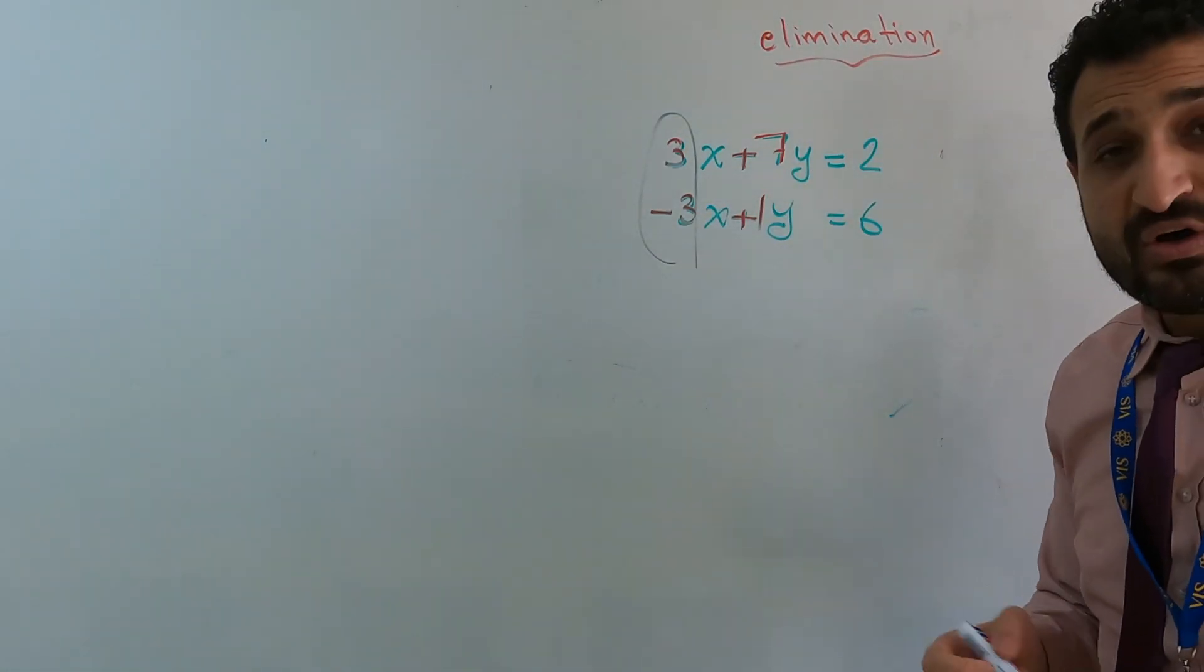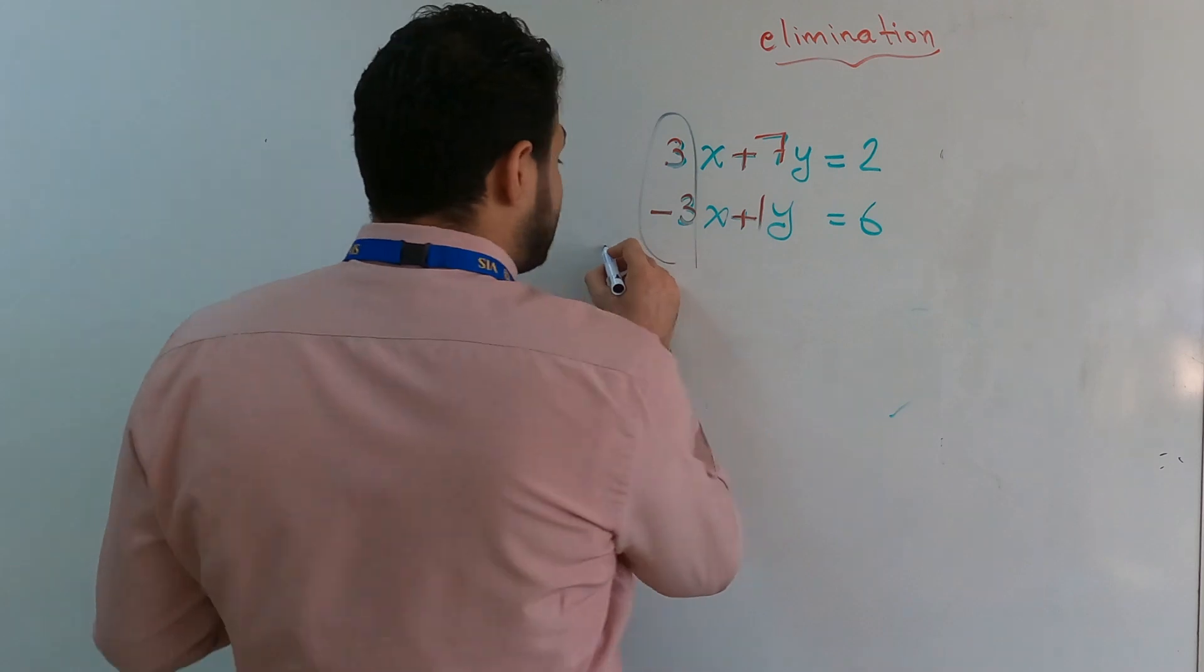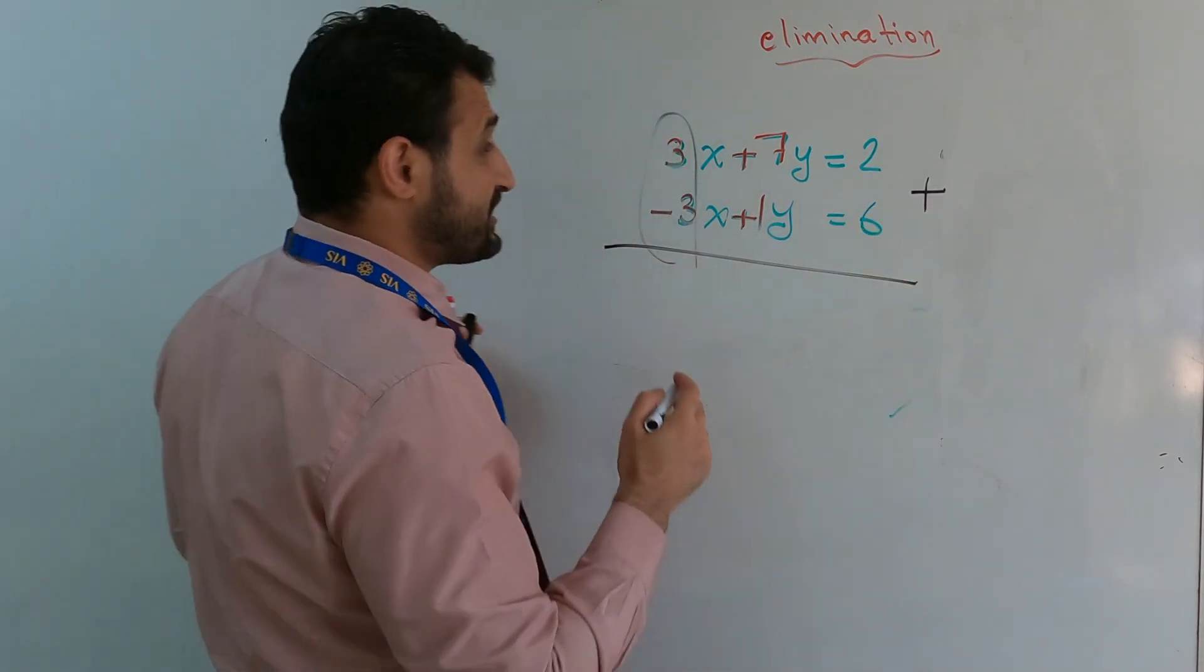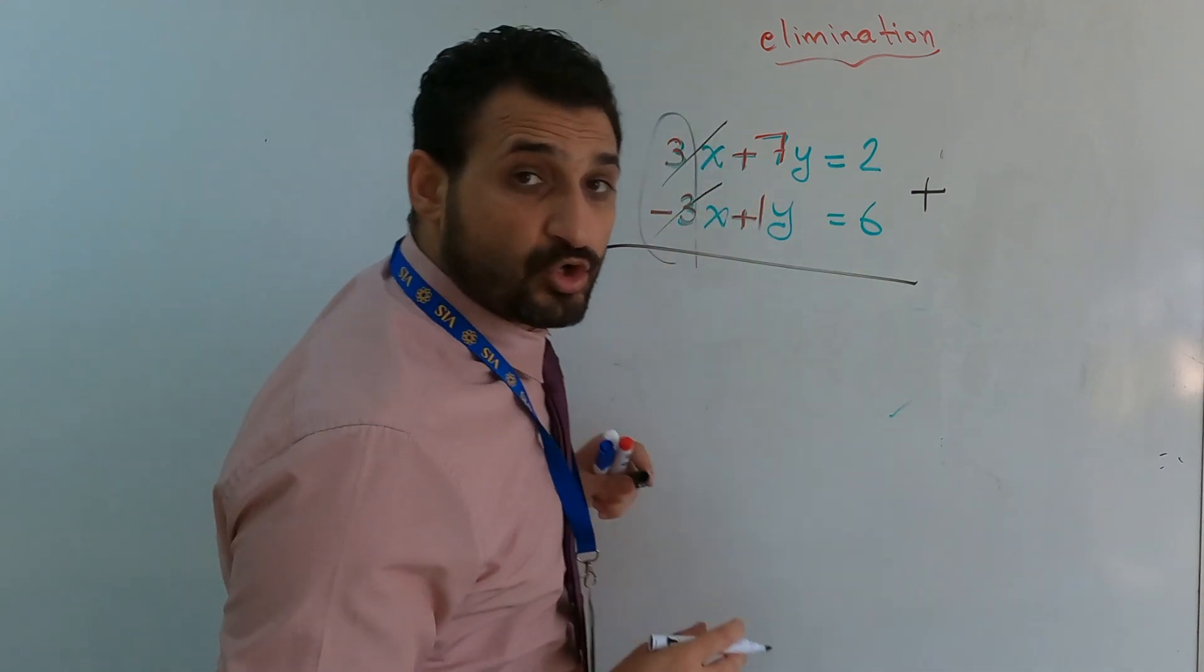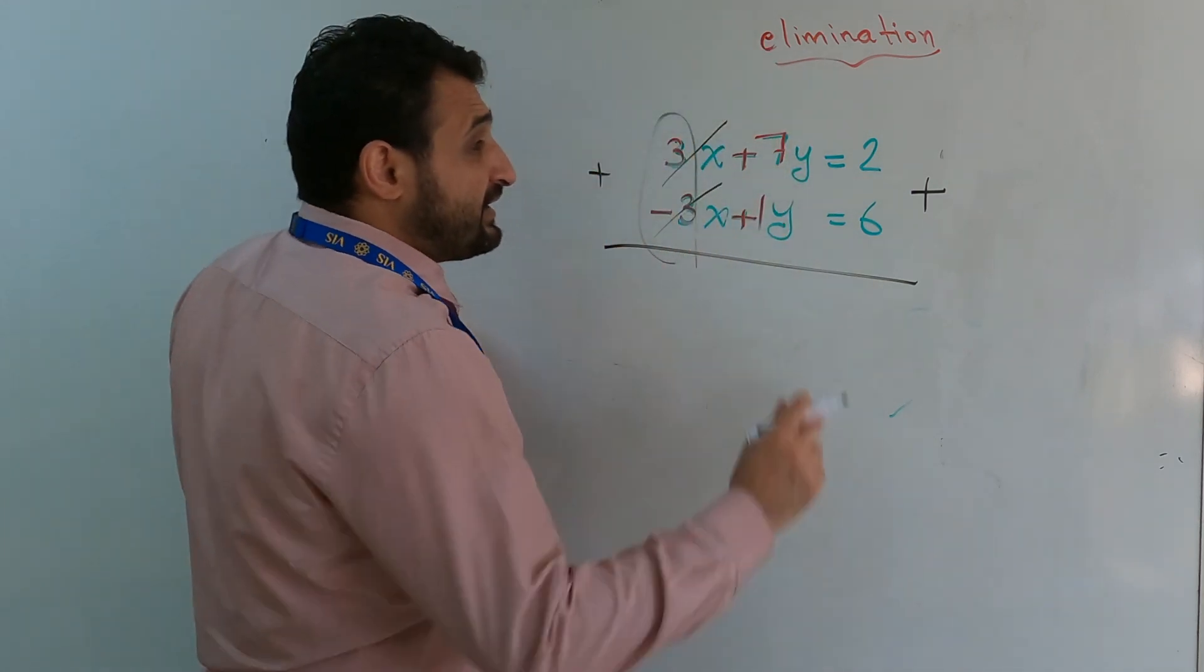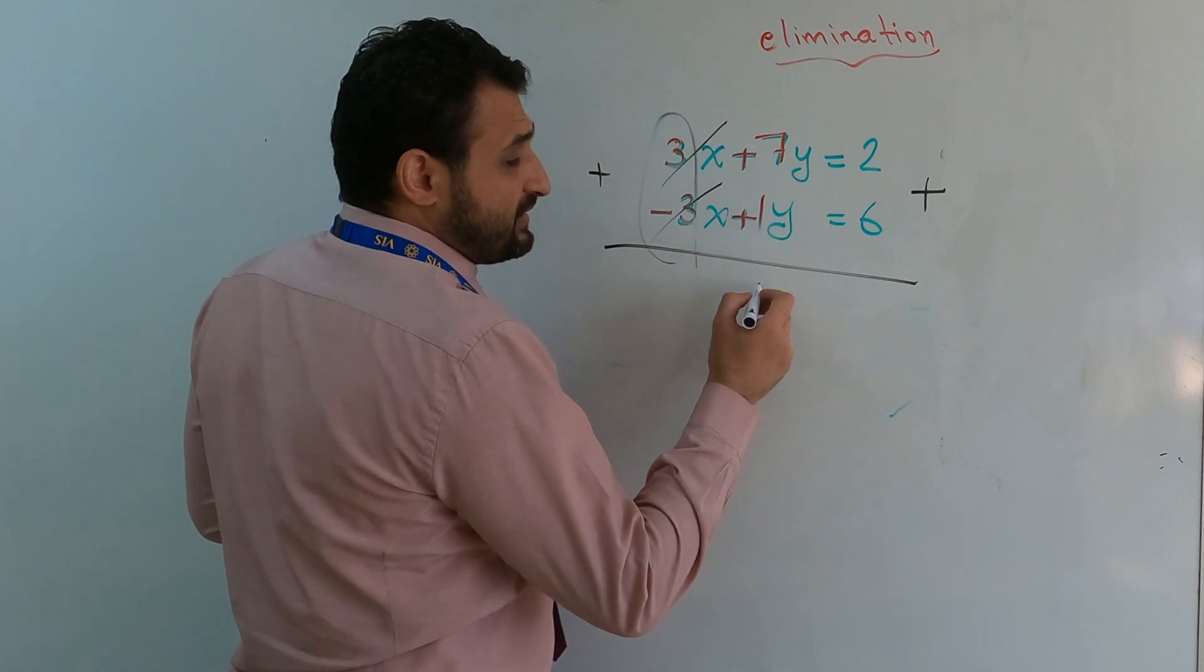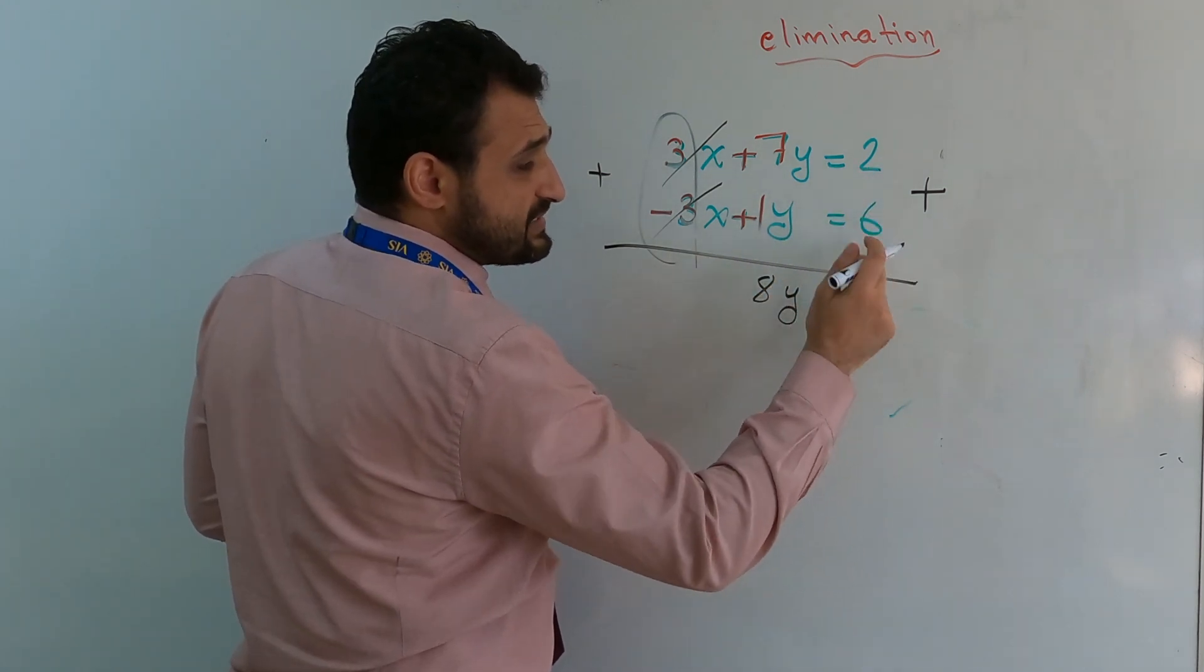That means it's ready. So all I have to do now is add them to each other, both equations to each other. 3x plus negative 3x is zero, or zero x, which is zero. 7y plus 1y, 8y. 2 plus 6, 8.